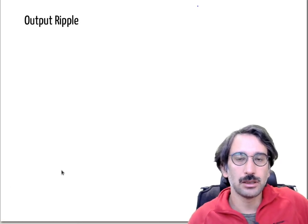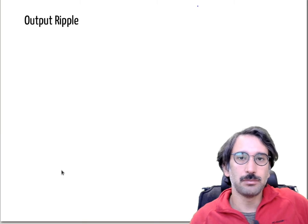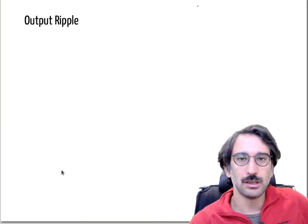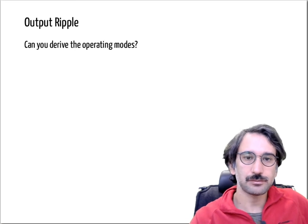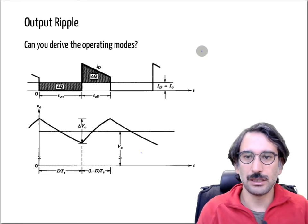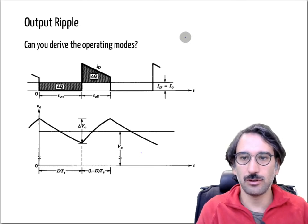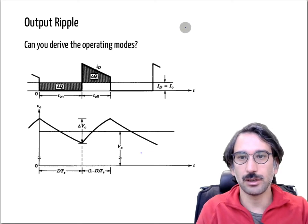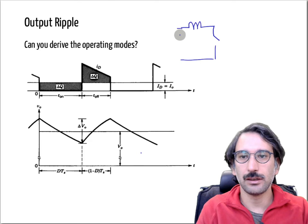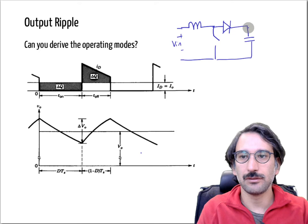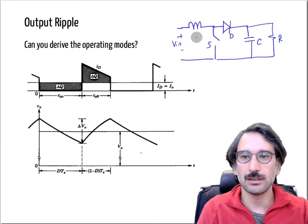Today we will talk about how we can control the output voltage ripple in a boost converter. Let's look at the operating modes. Here are the graphs, but let me draw the equivalent circuit first. We have the inductor directly connected to our input voltage source, a diode, a capacitor, and a resistive load. This is the diode, this is the switch, and this is the inductor.